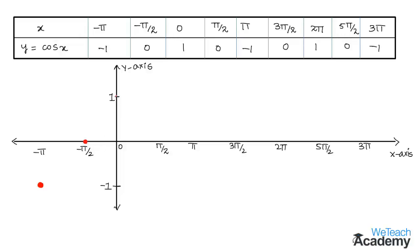For x equal to 0 degrees, y equals 1, giving a point above the origin. At x equal to pi by 2, y equals 0 on the x-axis. At x equal to pi, y equals minus 1. At x equal to 3 pi by 2, y equals 0. At 2 pi, y equals 1. At 5 pi by 2, y equals 0. At 3 pi, y equals minus 1. Joining all these points gives the graph y equal to cos x.